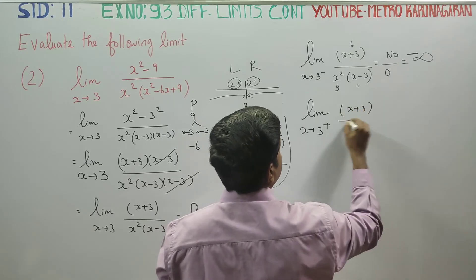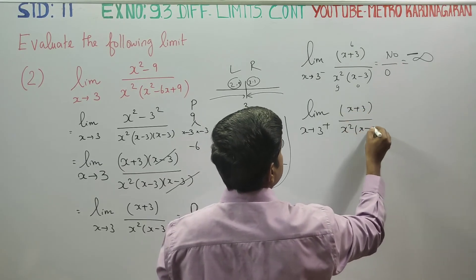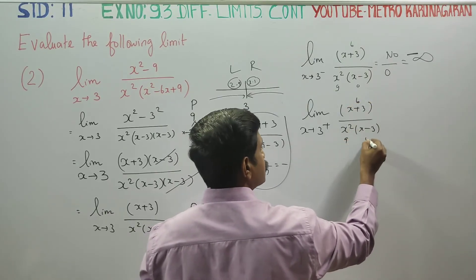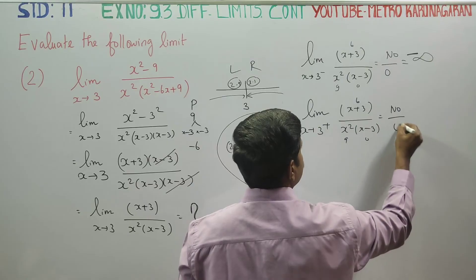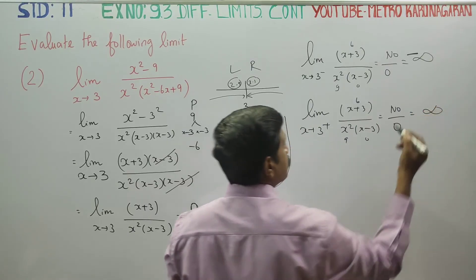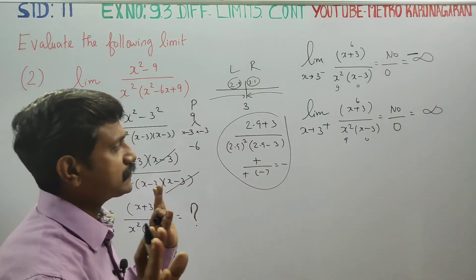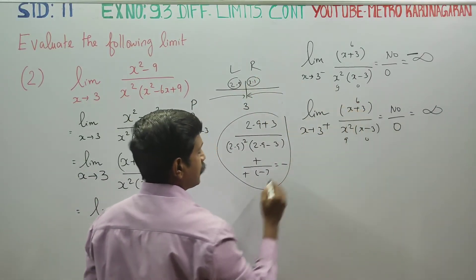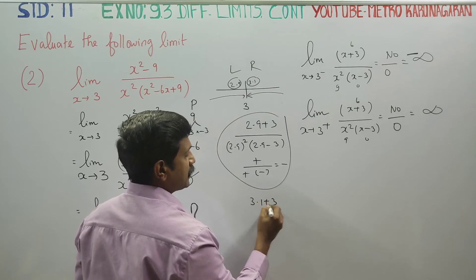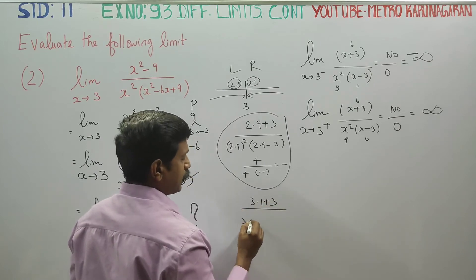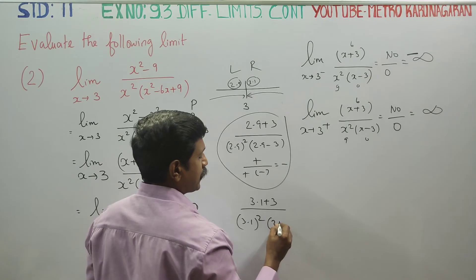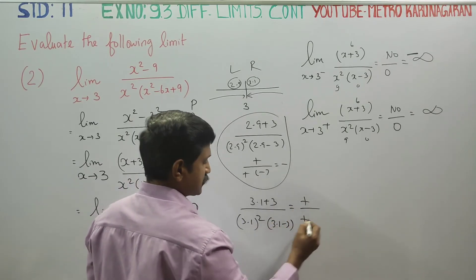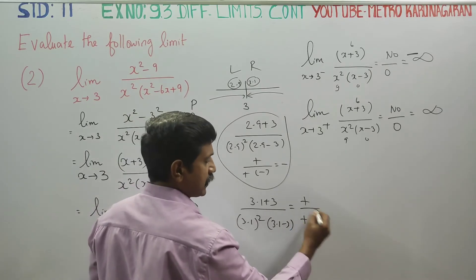Now for the right-hand limit, x approaches 3 from the right. We substitute x equals 3.1 into x plus 3 divided by x squared into x minus 3. Here 3.1 plus 3 is positive, 3.1 squared is positive, and 3.1 minus 3 is also positive, so the result is positive infinity.